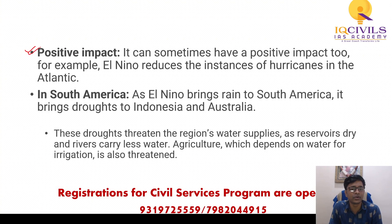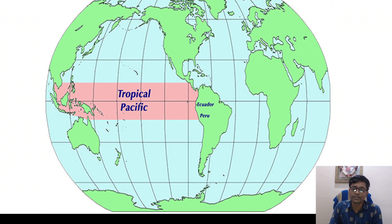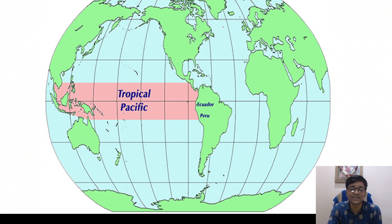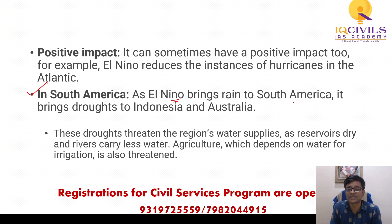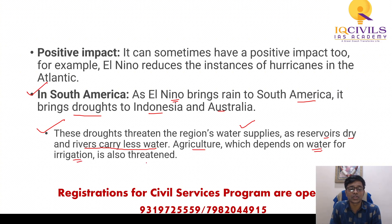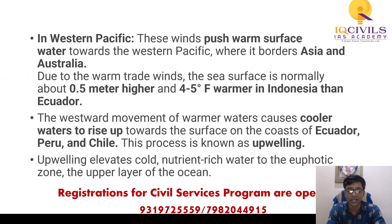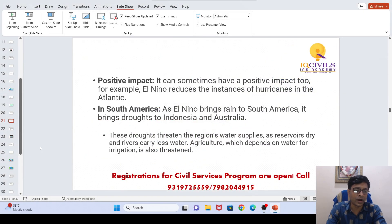El Niño can also have positive impacts. This is important for prelims: El Niño reduces the number of hurricanes in the Atlantic Ocean, which is positive because cyclones and hurricanes destroy cities, agriculture, and lives. However, while El Niño brings rain to South America, it brings droughts to Indonesia and Australia, threatening water supplies as reservoirs dry up and rivers carry less water. Agriculture dependent on irrigation is also threatened in Indonesia, Australia, and India.